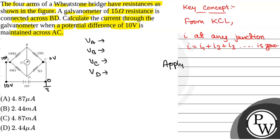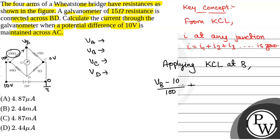Applying KCL at point B: the current coming from A is (Vb − Va) / 100, and since Va = 10 volt, this becomes (Vb − 10) / 100. Plus the current through the galvanometer is (Vb − Vd) / 15. And the current going toward C is (Vb − Vc) / 10, and since Vc = 0, this is Vb / 10. The sum equals zero.